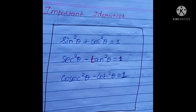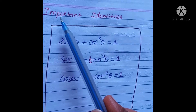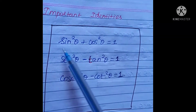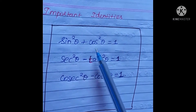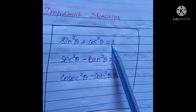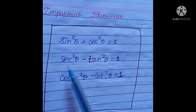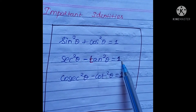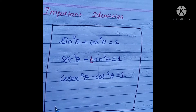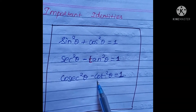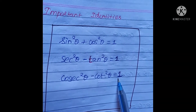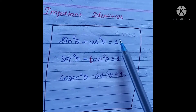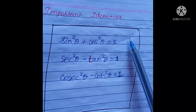So in trigonometry, important identities are: sin²θ + cos²θ = 1, sec²θ − tan²θ = 1, cosec²θ − cot²θ = 1.